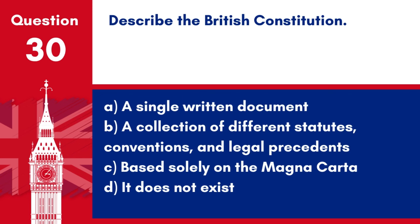Question 30. Describe the British Constitution. A. A single written document. B. A collection of different statutes, conventions, and legal precedents. C. Based solely on the Magna Carta. D. It does not exist. Answer: B. A collection of different statutes, conventions, and legal precedents. The British Constitution is not a single document, but a collection of statutes, conventions, and legal precedents.